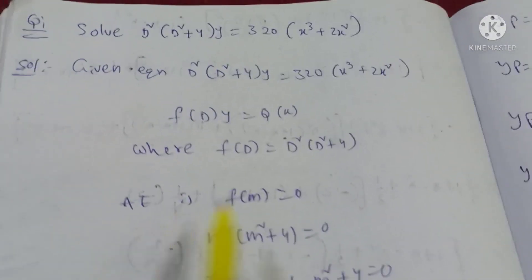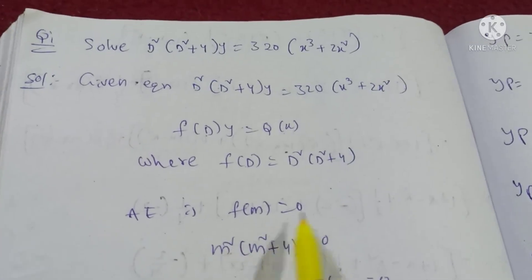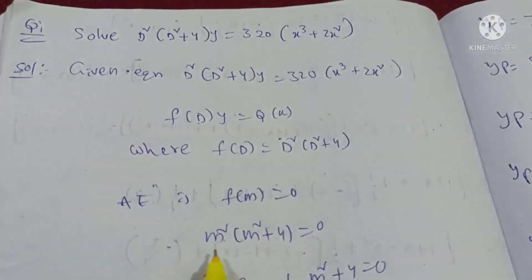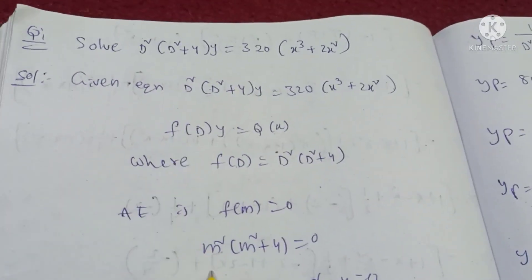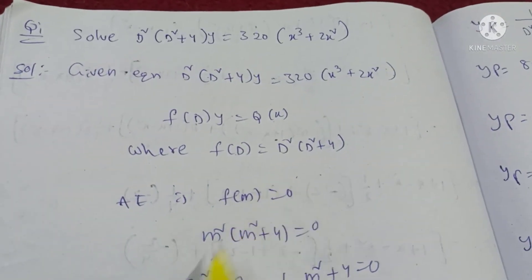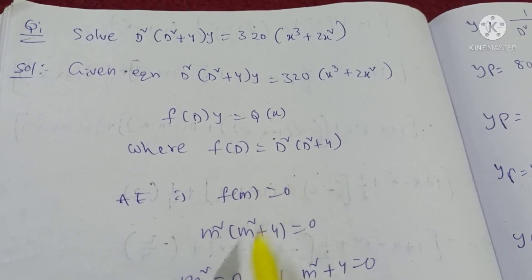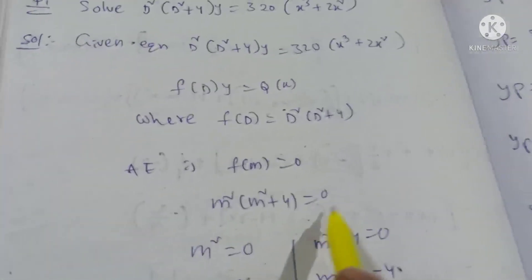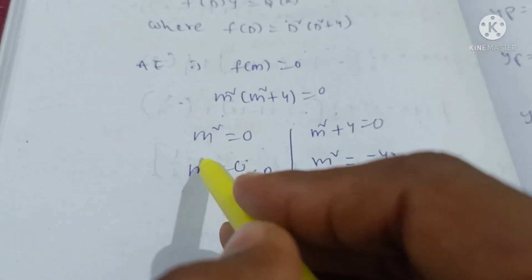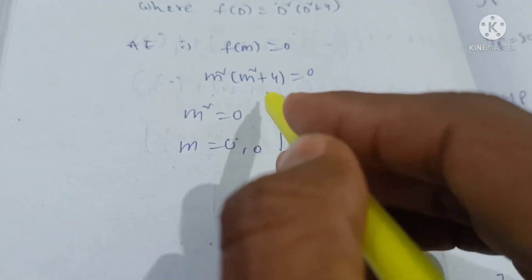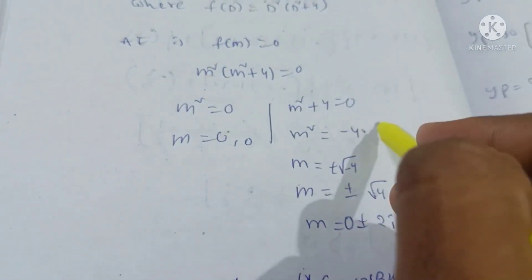The auxiliary equation is f(m) equals 0, giving m squared into m squared plus 4 equals 0. So m squared equals 0 and m squared plus 4 equals 0.